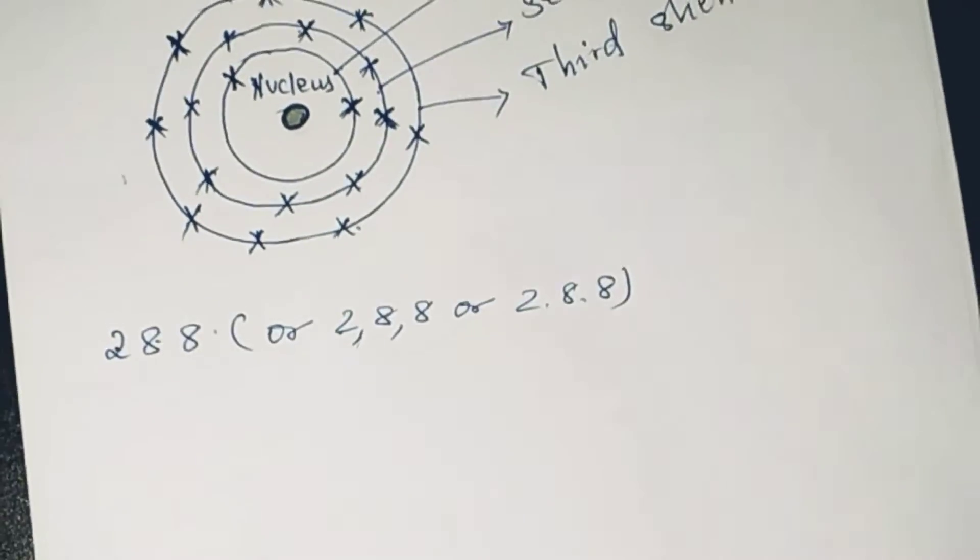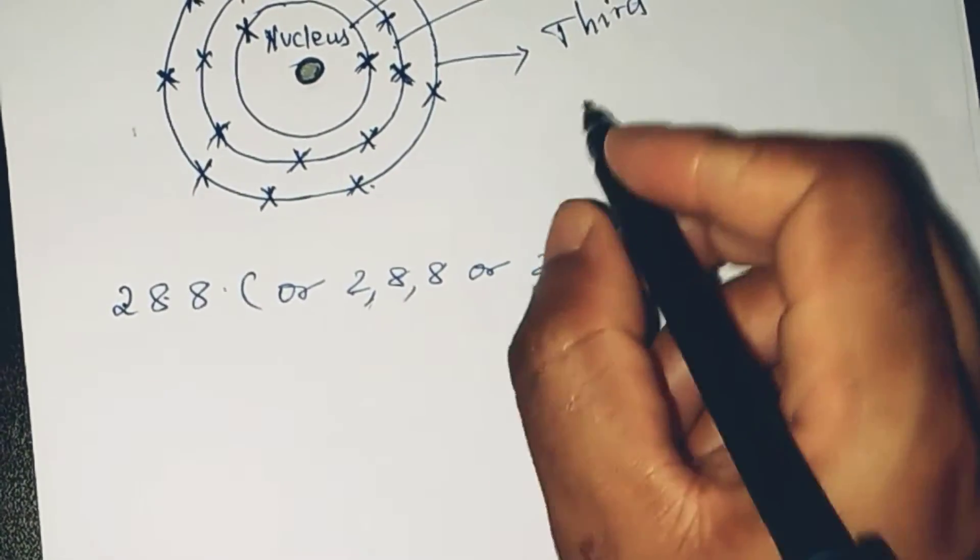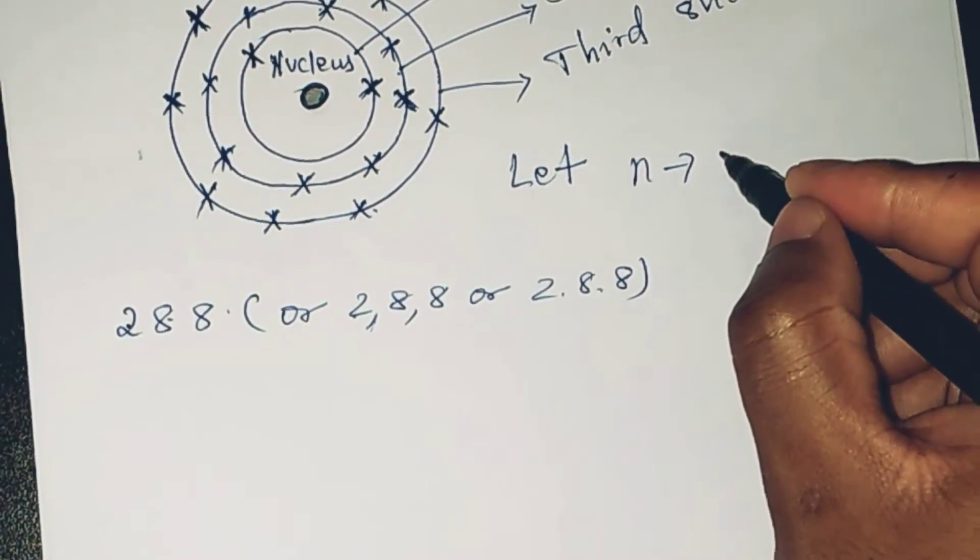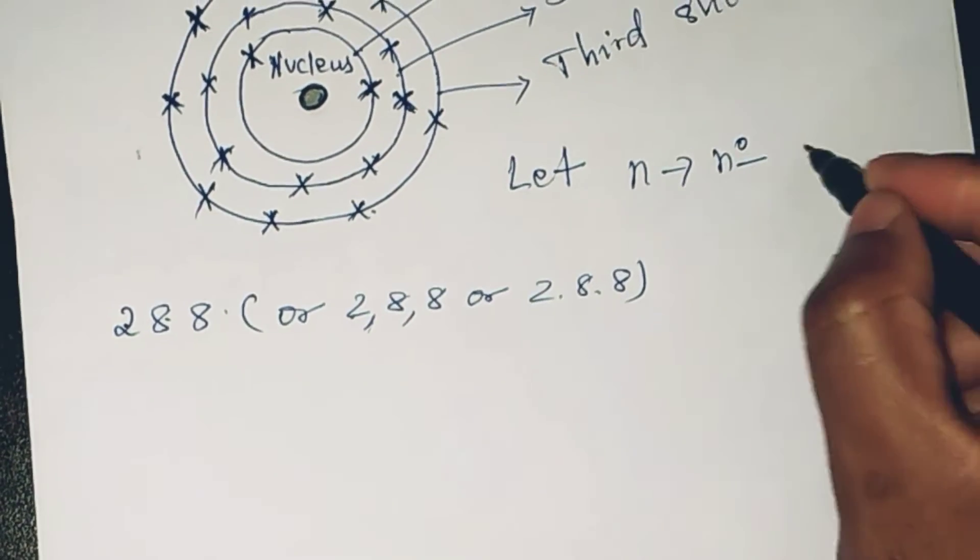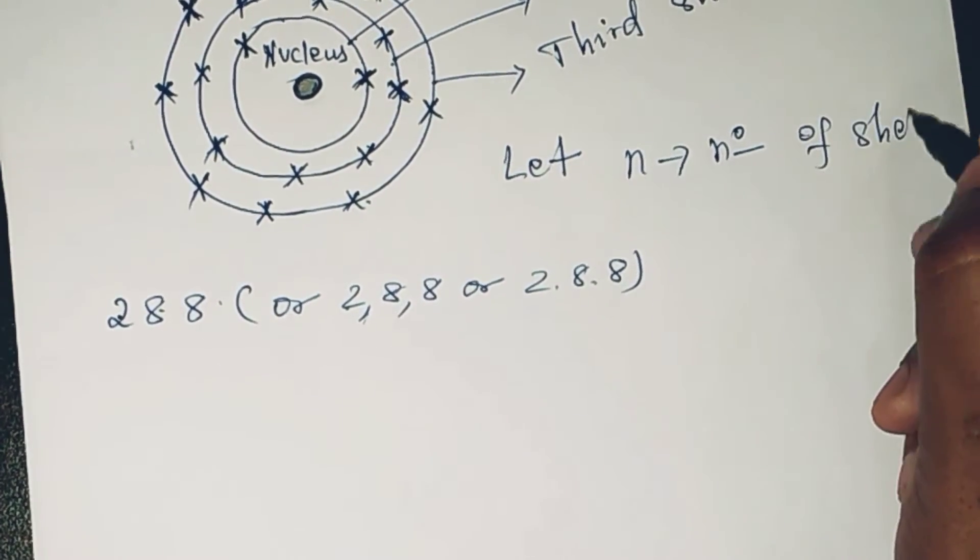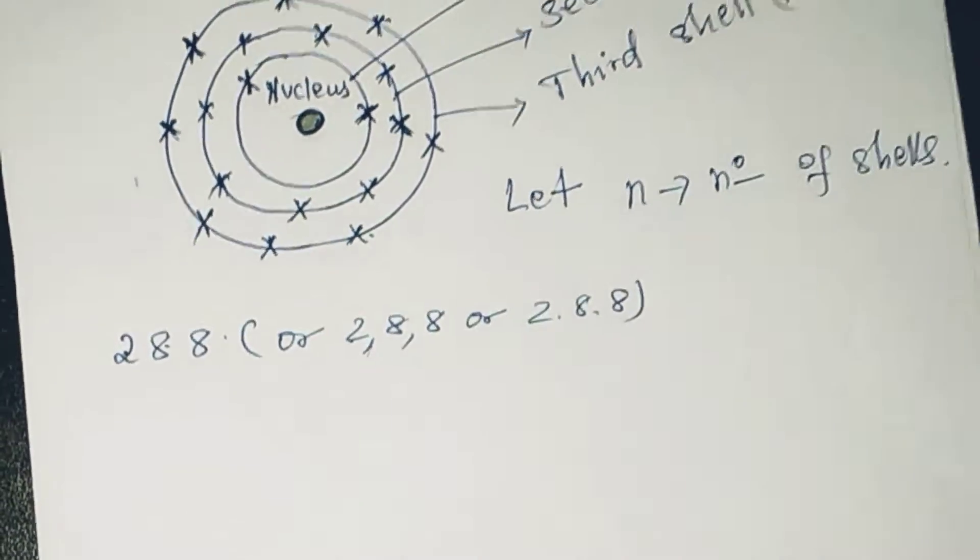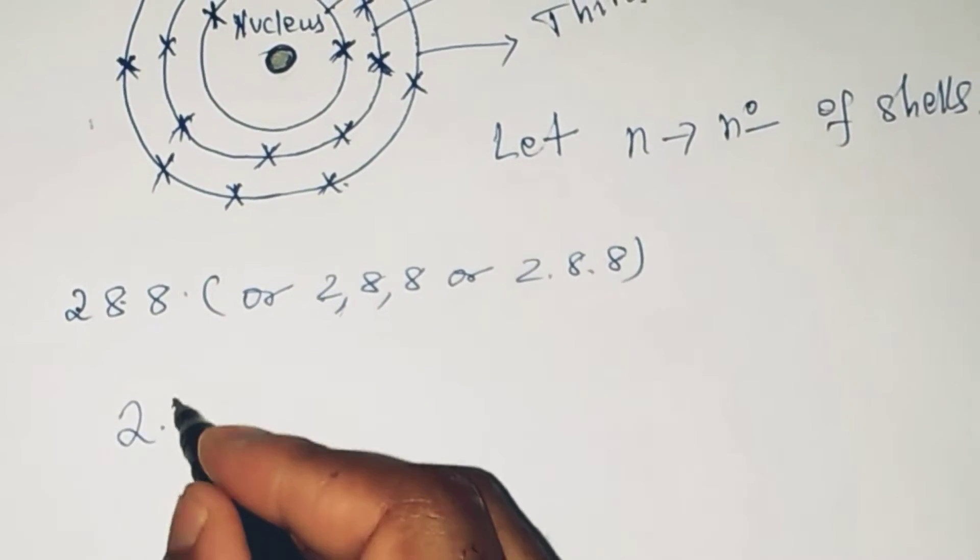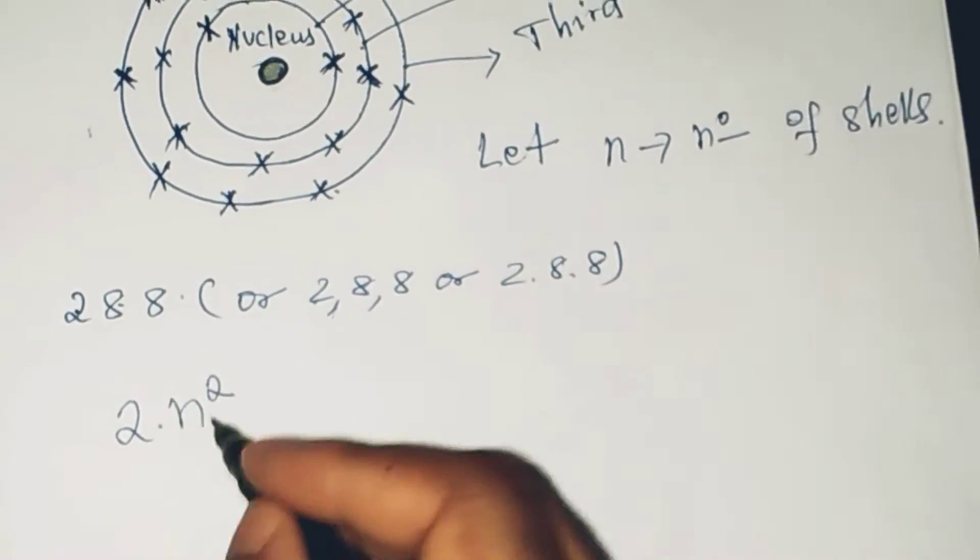Let n represent the number of shells. This formula is very simple: it's 2 times n squared. N is the number of shells, right?